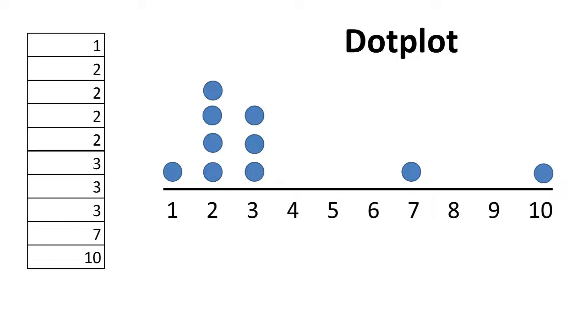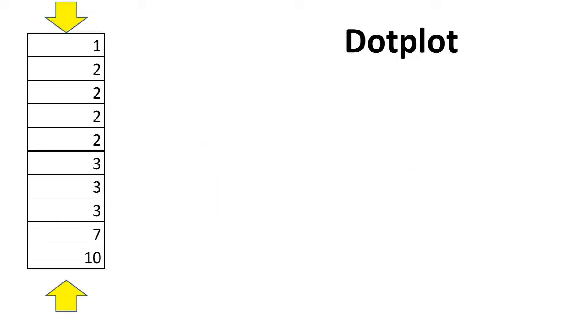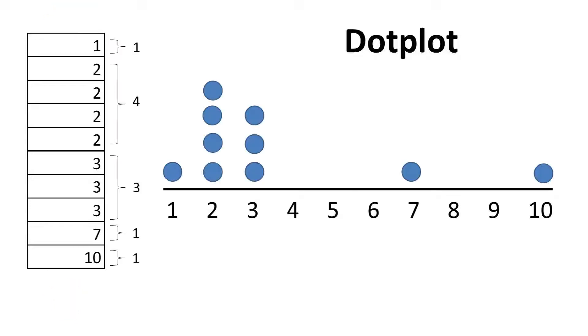Next we have a dot plot which you take the numbers you are working with, in this case numbers between one and ten. We then basically make a number line and place the number of times a particular number shows up represented by a dot above that number. So one shows up once, so one dot. Two shows up four times, so four dots, and so on and so forth.